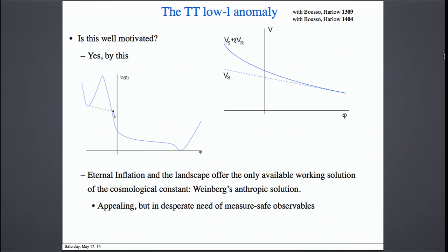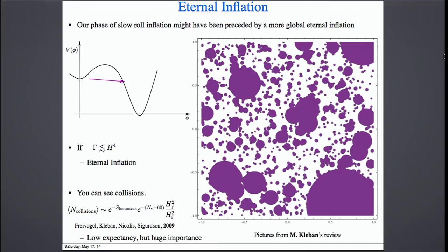One observable that was worked out in the past is the fact that if we live in false vacuum eternal inflation, we are in a bubble in a sea of false vacuum where it is expanding exponentially, and new bubbles pop out and hit us. The average number of collisions that we expect is very low — suppressed by two exponentials, boosted by a small number. The fact that we could see a collision from another bubble has low theoretical expectation, but it is of huge importance because it's a very well-defined signal that doesn't depend on the measure.